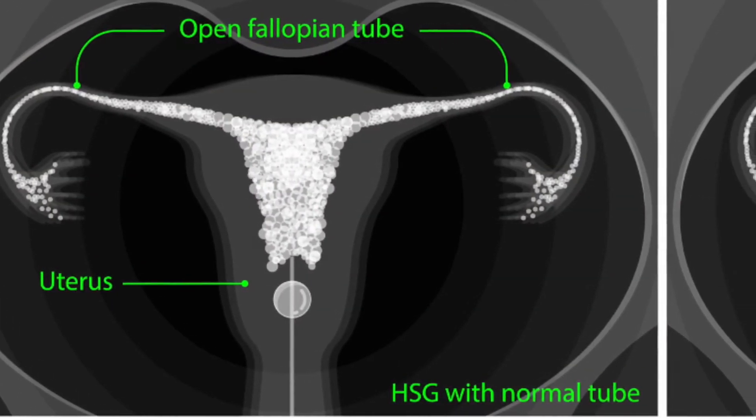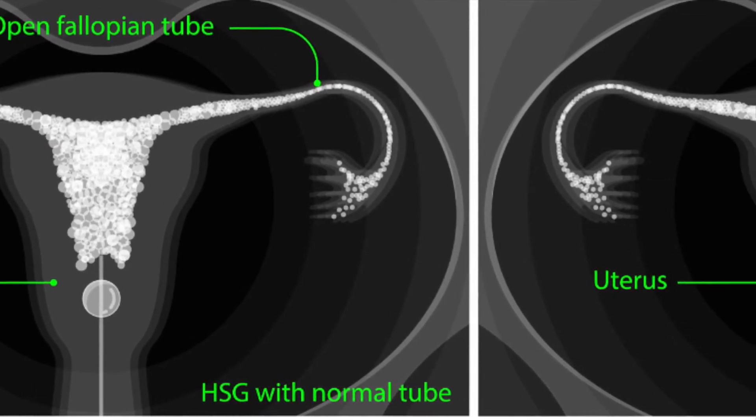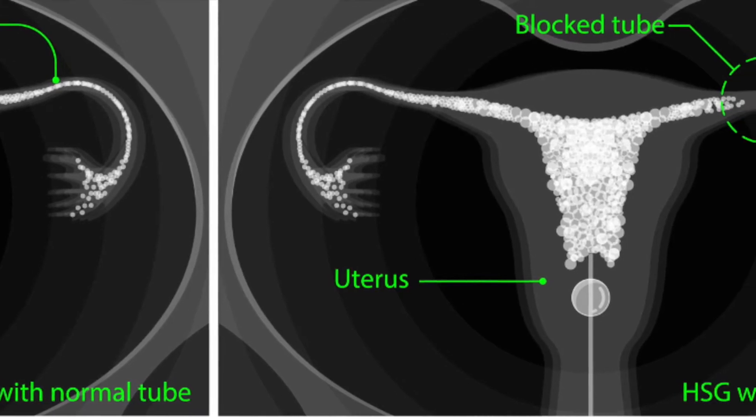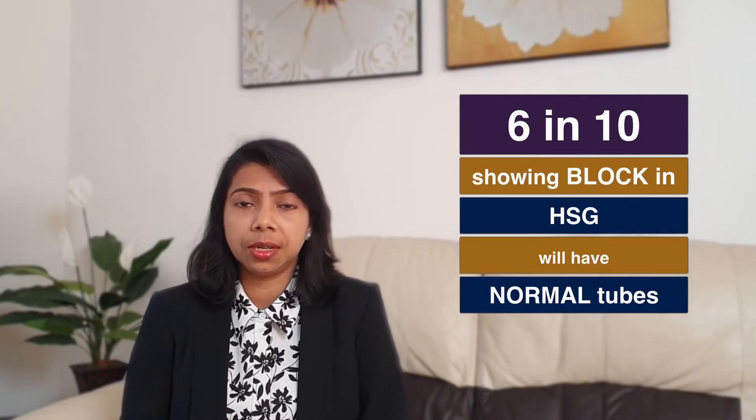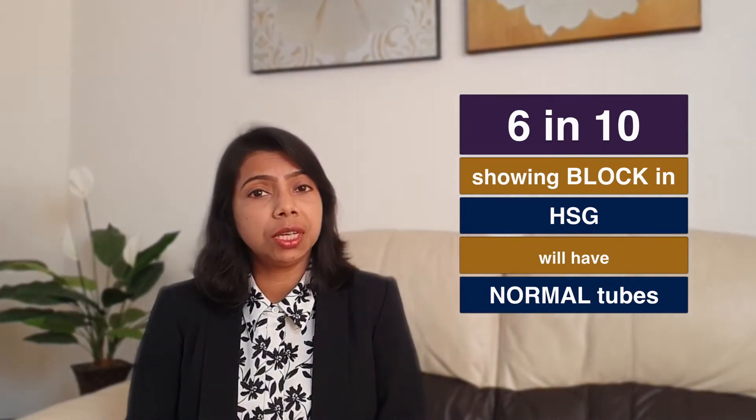Majority will fall pregnant naturally. If you do not conceive in 6 to 12 months, then you can consider testing your tubes using tests like Hysterosalpingogram (HSG) or HyCoSy. In HSG, dye is instilled into the uterus and an X-ray is taken. If the tubes are open, dye can be seen flowing out through your tubes; the dye will not flow out if the tube is blocked. If HSG shows your tubes are open, then it is quite accurate. But it is not very accurate if it shows tubes are blocked — 6 out of 10 women diagnosed with a blocked tube on HSG will find their tubes to be normal if they retest with HSG or undertake a laparoscopy. So if you have been diagnosed with tubal blockage on HSG, please remember to retest to confirm.